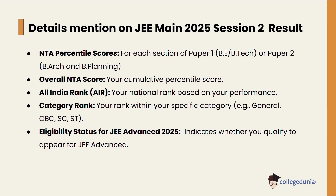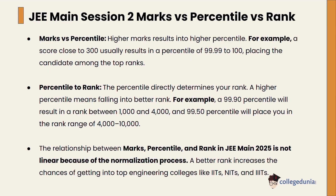Let's see the details mentioned on the JEE Main 2025 Session 2 result: the NTA percentile score for each section of Paper 1 or Paper 2, the overall NTA score, the All India Rank, the category-wise rank, and eligibility status for JEE Advanced 2025.